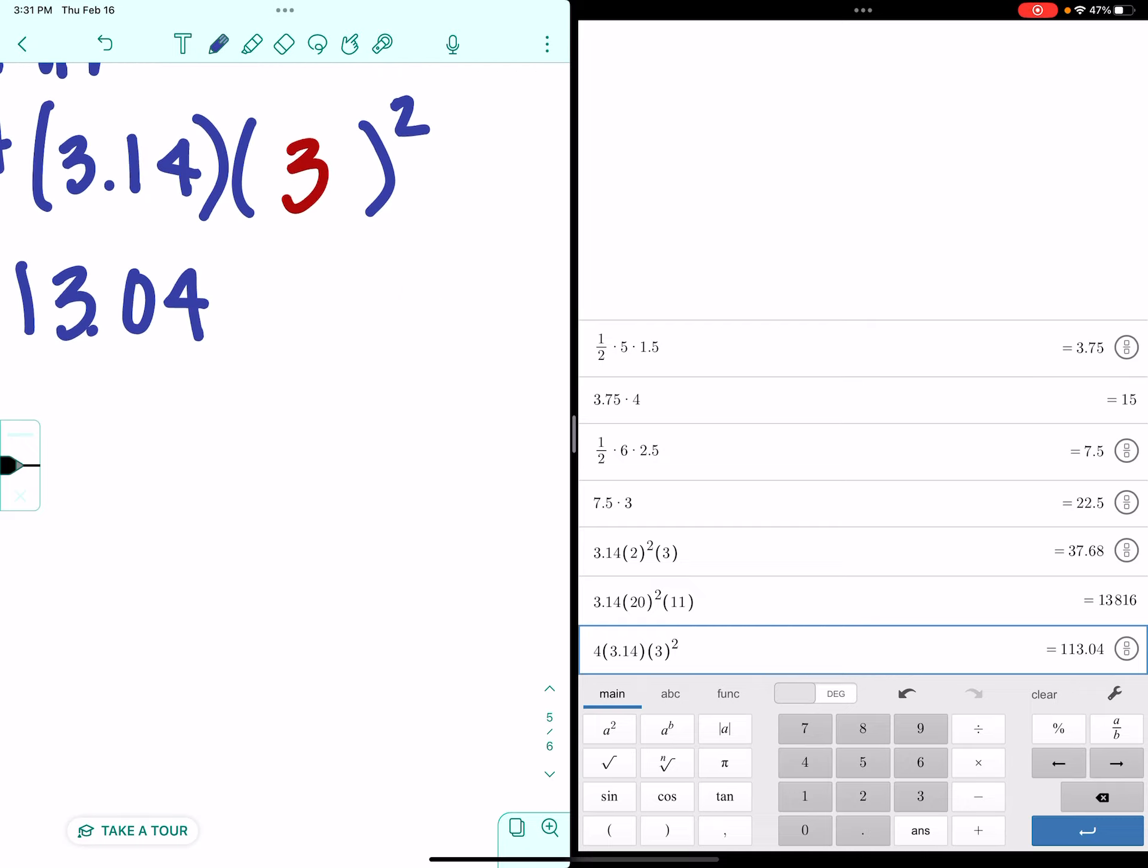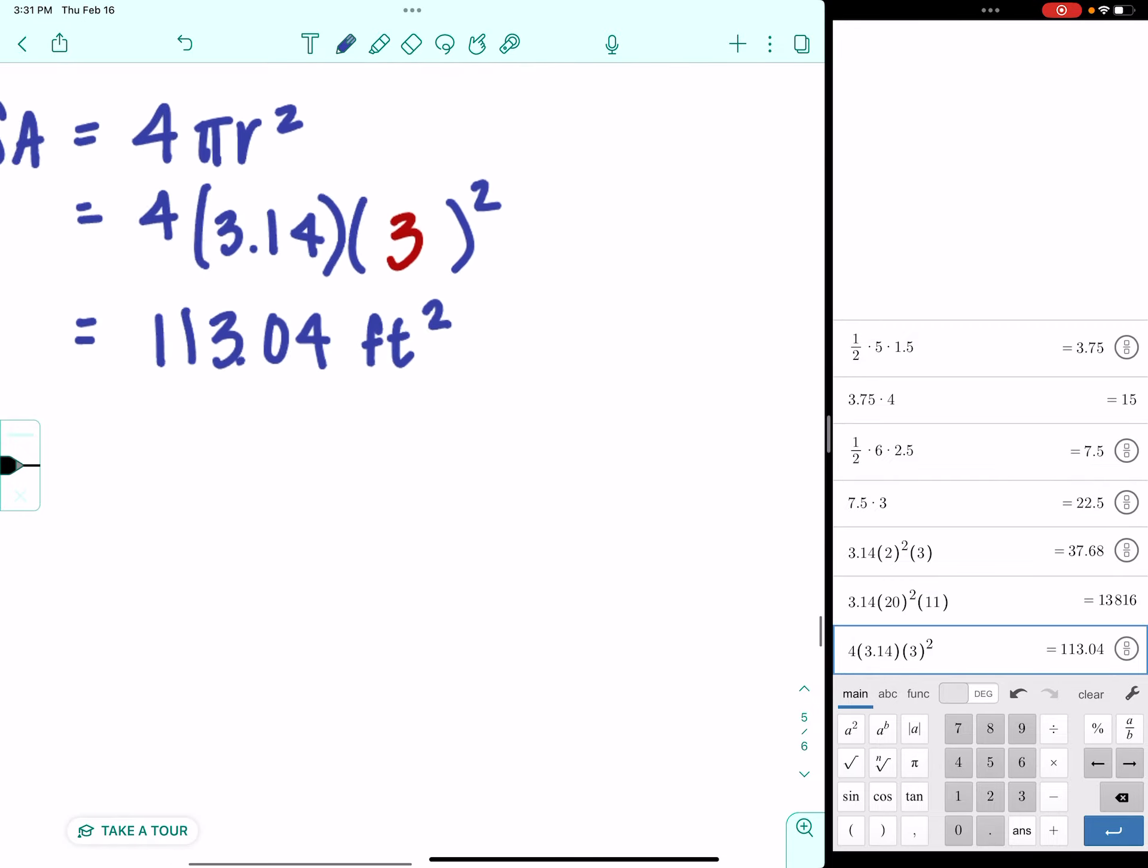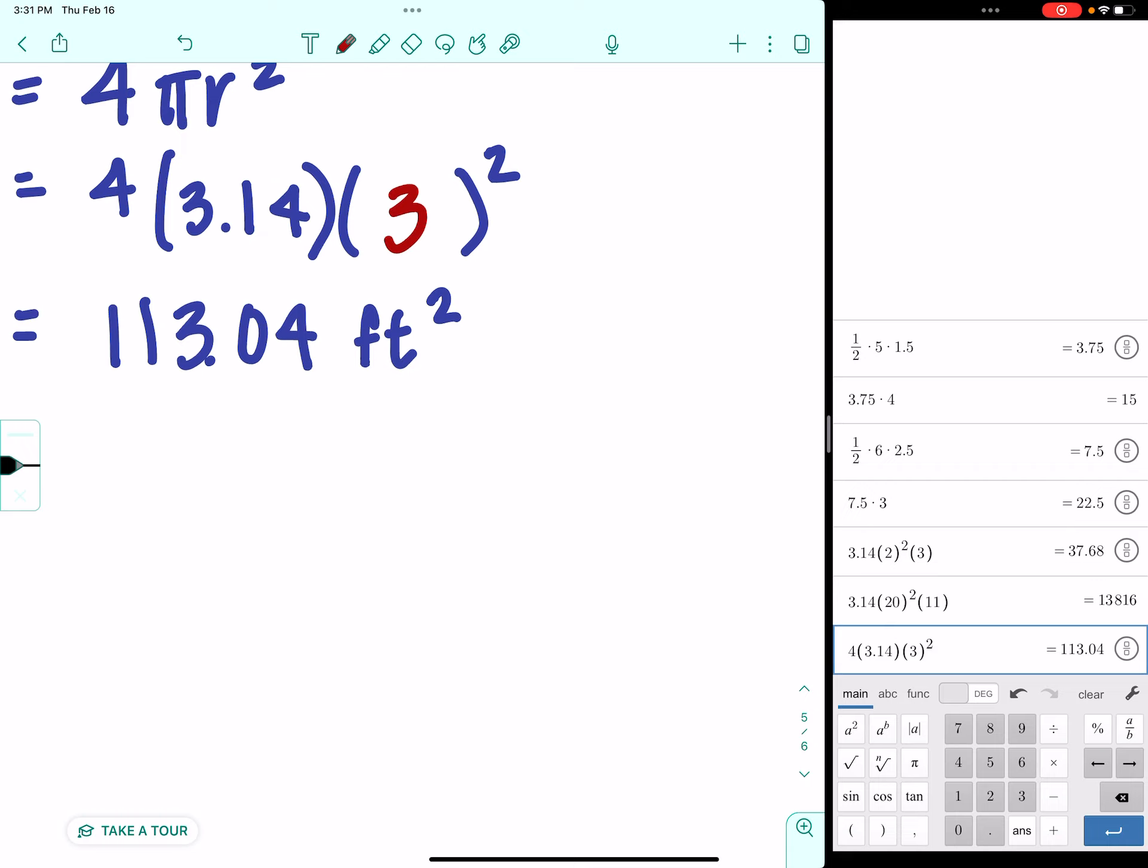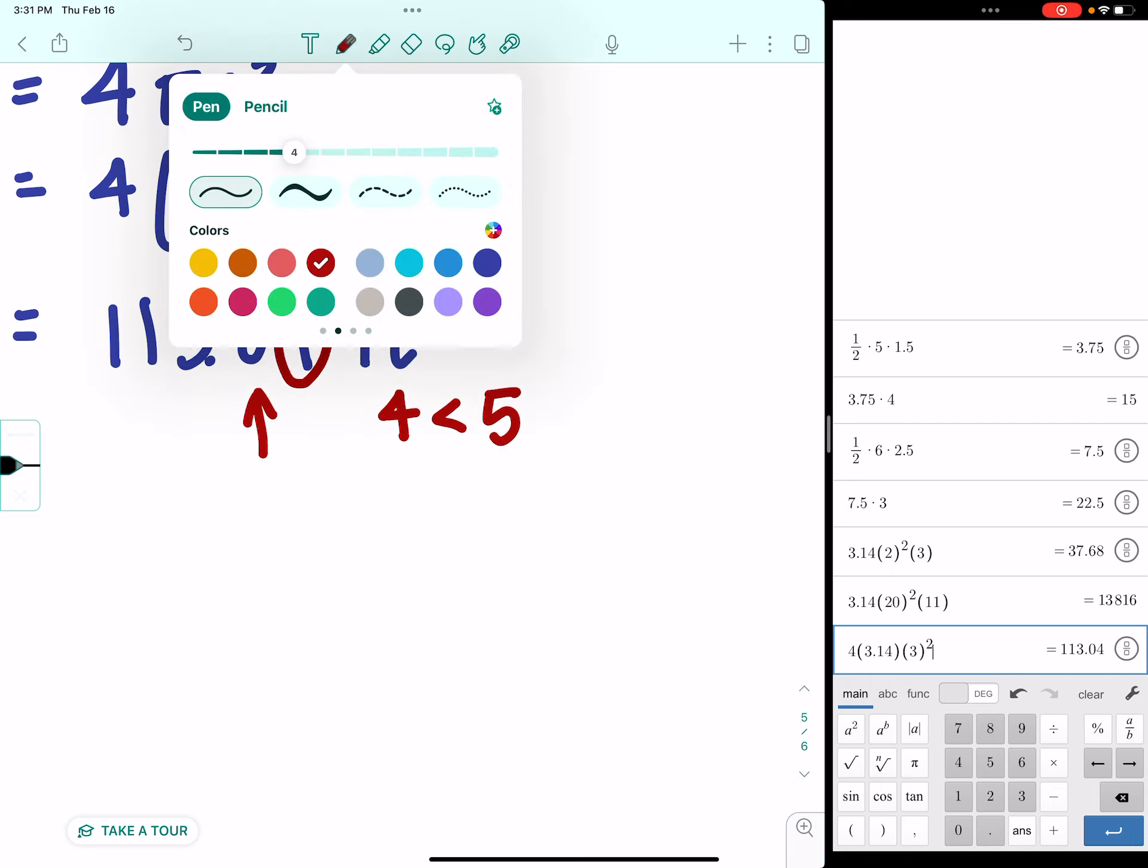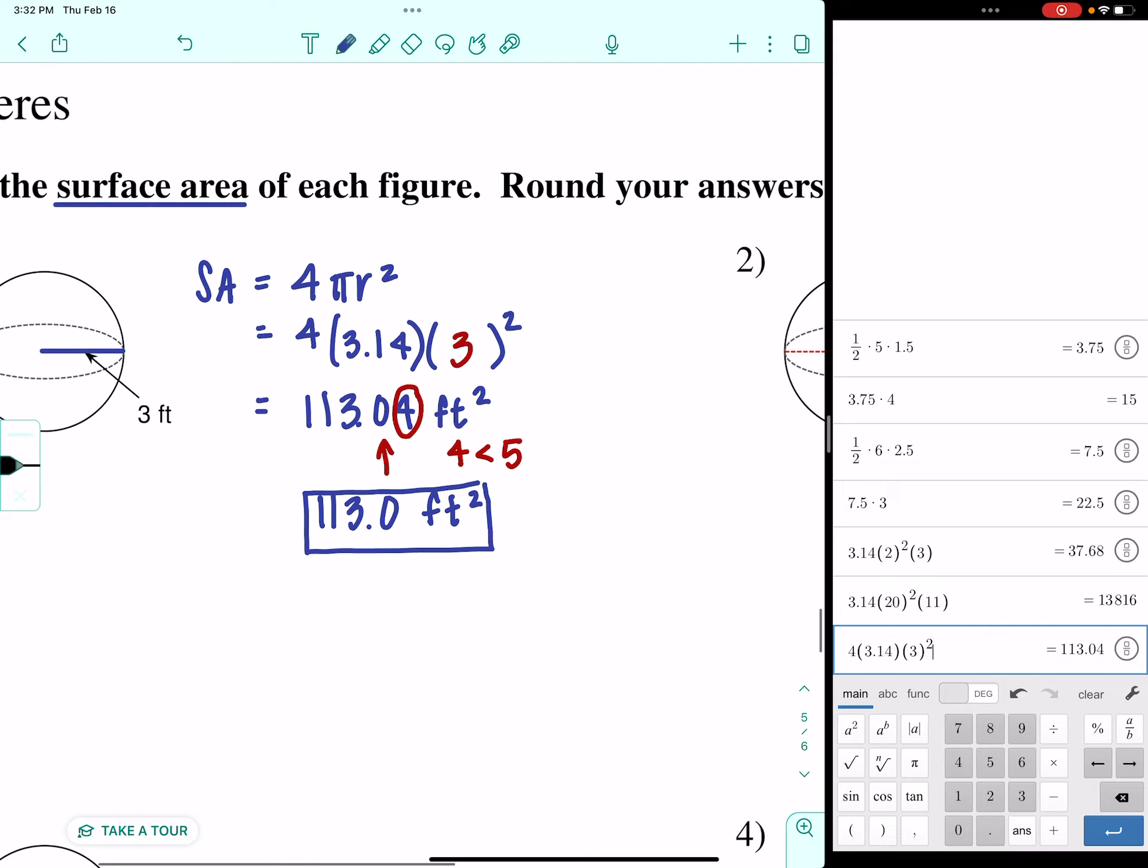We are measuring in feet. And we're dealing with area. So, this is square feet. Let's look at our rounding requirements. We're rounding to the nearest tenth again. So, here's my tenths place. That means I'm going to take a look at the four. I know four is less than five. That means I'm not going to mess with the zero. I'm going to leave the zero just like it is. So, this is 113.0 square feet for our surface area.